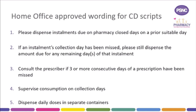In November 2015, the Home Office introduced five types of approved wording for instalment prescribing. The first states: 'please dispense instalments due on pharmacy close days on a prior suitable day' — a prescription must specify this wording to enable advanced supplies for any pharmacy closure days. The second states: 'if an instalment's collection day has been missed, please still dispense the amount due for any remaining days of that instalment.' The third states: 'consult the prescriber if three or more consecutive days of a prescription have been missed.' If a patient has not taken the regular prescribed dose of opioid, there is a strong possibility that their tolerance to that drug could have reduced, increasing risk of overdose if the usual dose is then taken.